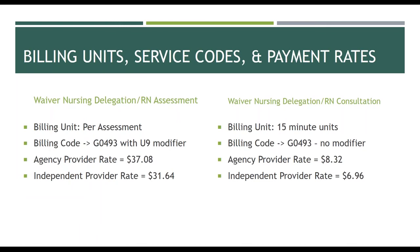The payment rate for the RN assessment: this is a flat rate. The billing code is G0493 and it requires a U9 modifier. An agency will receive $37.08 for that assessment and a non-agency or independent provider will receive $31.64. Note: in waiver nursing, the U9 modifier was associated with the consultation rather than the assessment, so be aware the modifier usage is different here with nursing delegation.